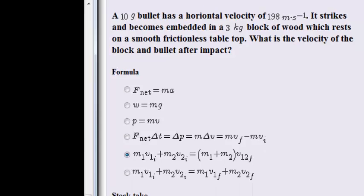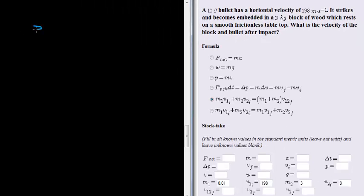Okay, so it's obviously going to benefit us to just draw a sketch of what's happening here. So there we have a block of wood which we said was 3 kilograms. Our bullet that is on its way to be embedded into that block of wood is traveling at 198 meters per second.